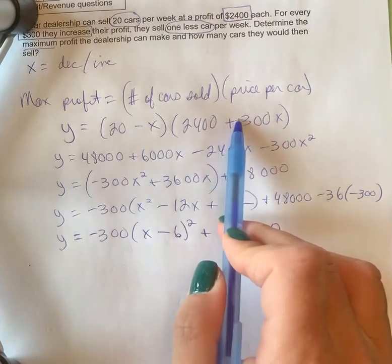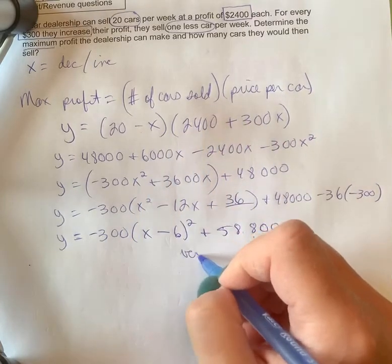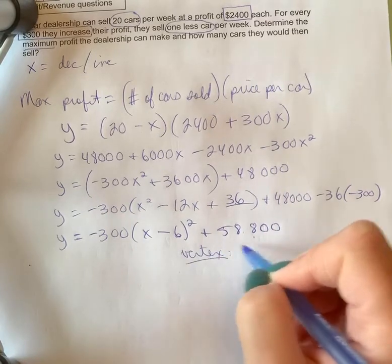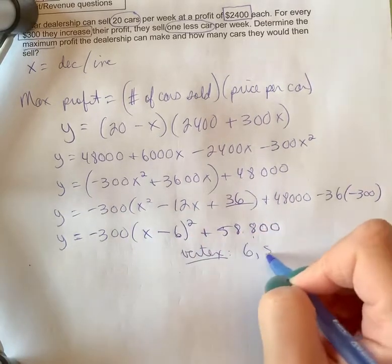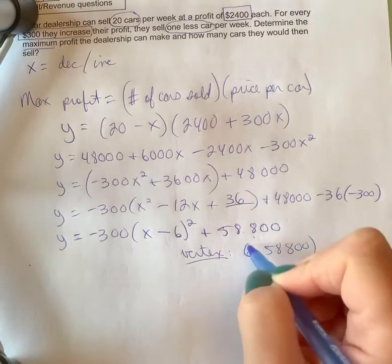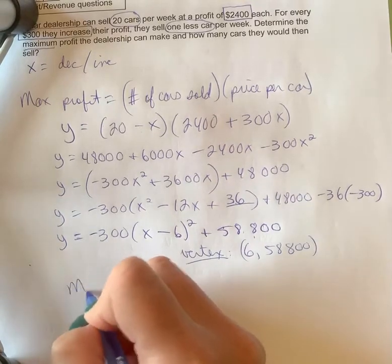Okay, so let me just be clear on what my vertex is. So it's positive 6—remember, it appears to be the opposite sign.